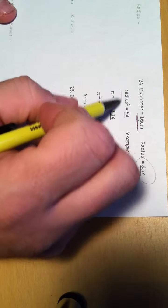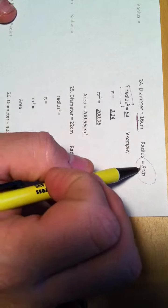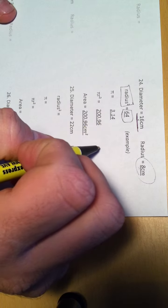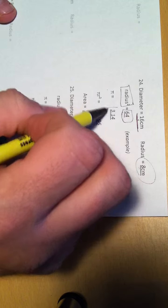So, the next question is, what is the radius squared? 8 times 8 is 64. What are we using for pi? 3.14.